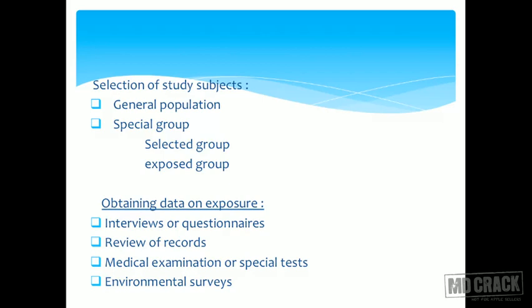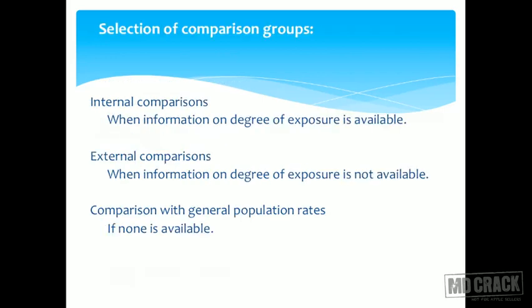Other data collection methods include review of records — for example, recording reports from patients at a hospital affiliated with an insurance company — medical examination or special tests such as measuring blood pressure or blood sugar, and environmental surveys. Environmental surveys are a good method for measuring environmental contaminants and allow you to classify exposure as high, medium, or low.